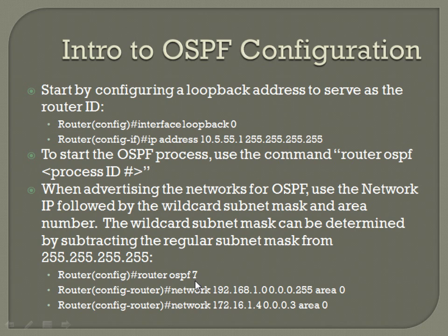When advertising networks for OSPF, use the network IP followed by the wildcard subnet mask and area number. The wildcard subnet mask can be determined by subtracting the regular subnet mask from 255.255.255.255. Wildcard subnet masks are used for advertisements in OSPF and also whenever you're dealing with firewall ACLs — instead of using the subnet mask, you always use the wildcard subnet. For example, if your subnet mask is a /30, which is 255.255.255.252, subtract it from all 255s to get 0.0.0.3. You can apply that rule for any subnet.